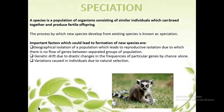What is speciation? A species is a population of organisms consisting of similar individuals which can breed together and produce fertile offspring. The process by which new species develop from existing species is known as speciation. Important factors leading to the formation of new species include geographical isolation of a population, which leads to reproductive isolation and no gene flow between separated groups; genetic drift — drastic change in the frequencies of particular genes by chance alone; and variations caused by natural selection.